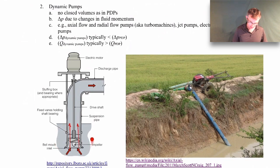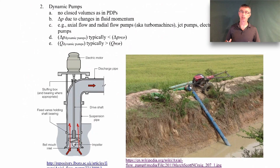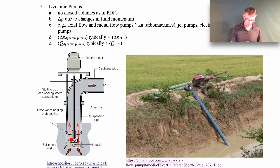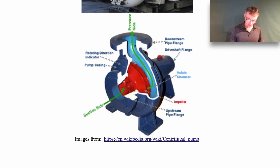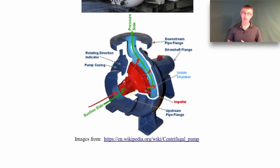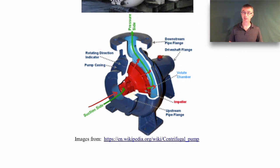The centrifugal pump shown earlier is a radial flow pump — flow comes in axially but goes out radially. An axial flow pump, like the one shown here, has a motor with a drive shaft connected to an impeller with airfoil-shaped blades. It produces a pressure difference across the blades and forces fluid in the same axial direction throughout. There are also mixed flow pumps that combine axial and radial flow — that's called a mixed flow pump.